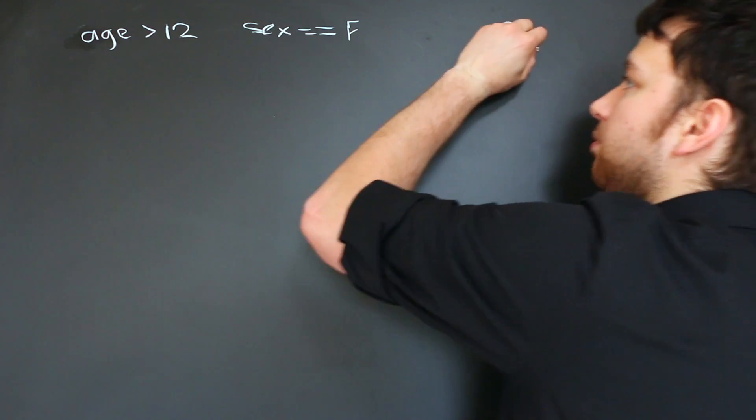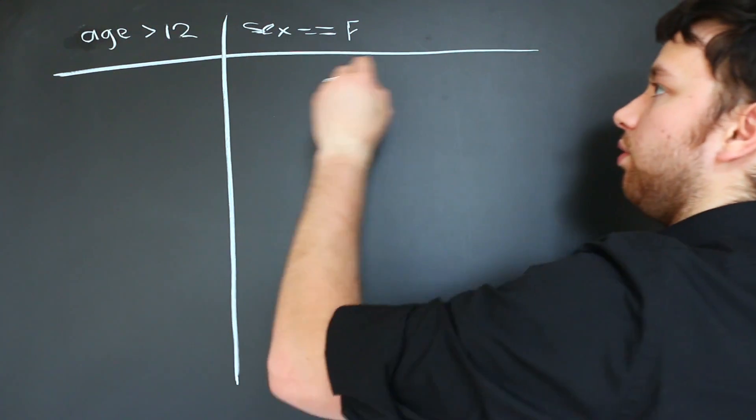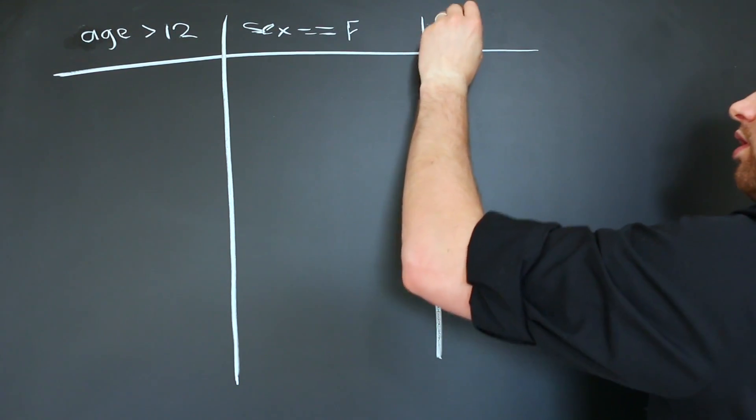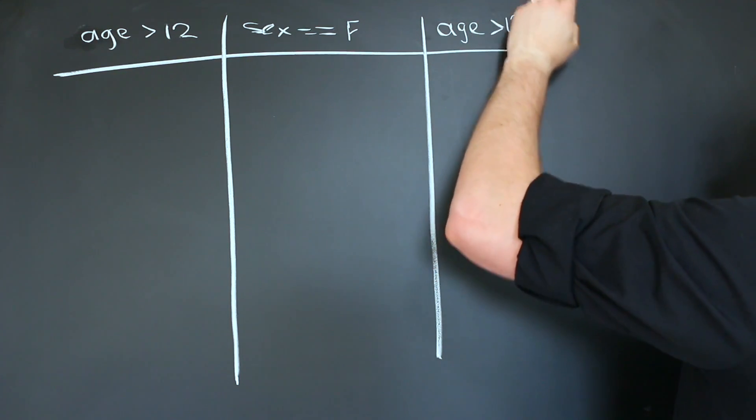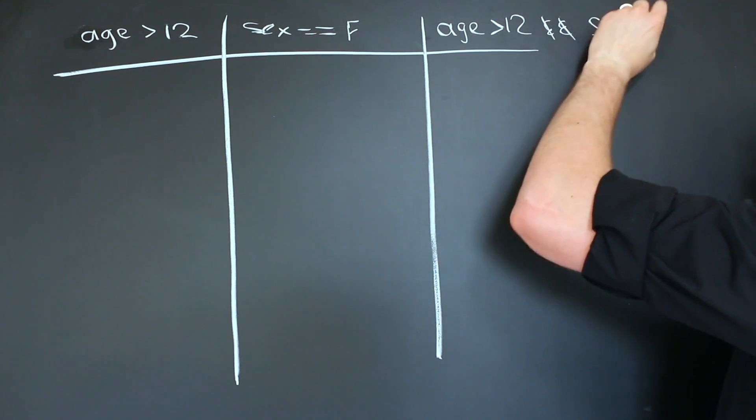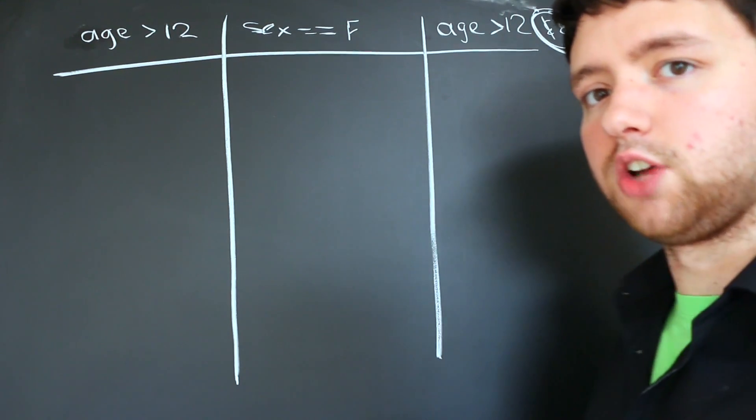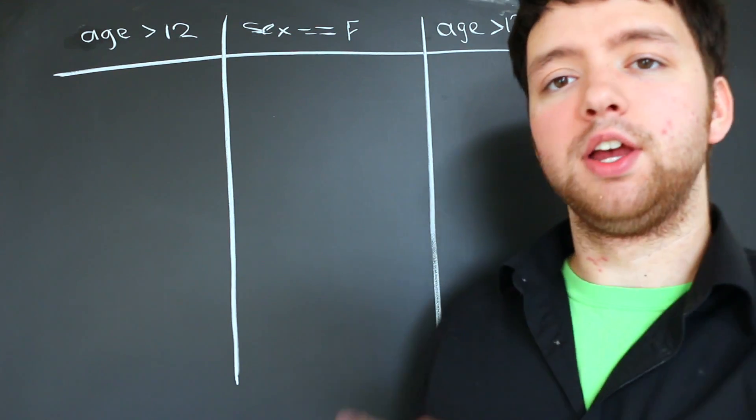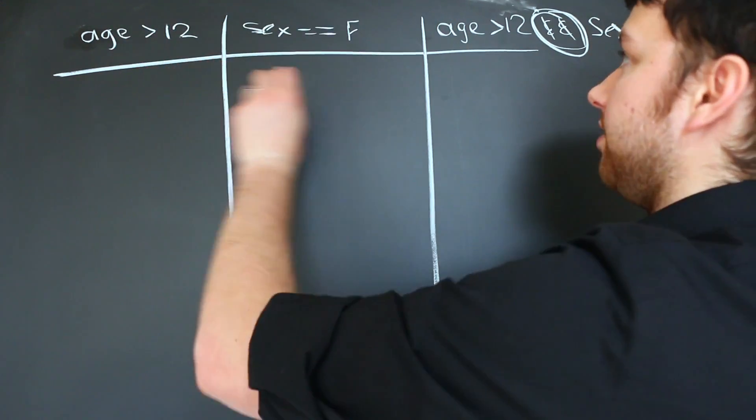then we would do something like sex is female. And now we want to evaluate on both of these. So what we do is we create a table and we put all of the possible values for these things. And then what happens is that this final column, we have the combination. So age greater than 12 and sex is female. This double and sign is known as a logical operator. And it allows us to combine multiple expressions.